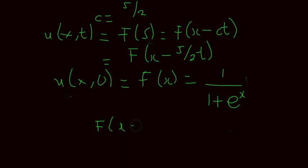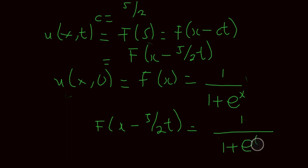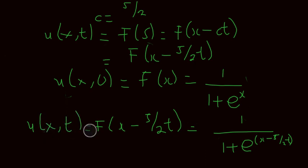So f of x minus 5/2 t: wherever I see x I put this whole thing in, giving 1 divided by 1 plus e to the exponent (x minus 5/2 t). This is the solution to your differential equation — u(x, t) equals this. That's how we go about solving transport equations — very simple.